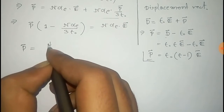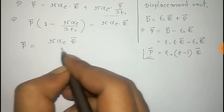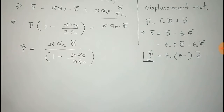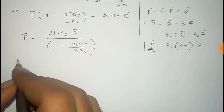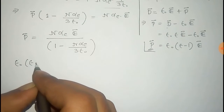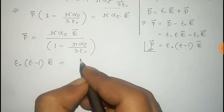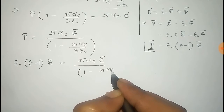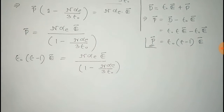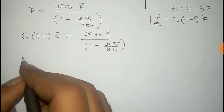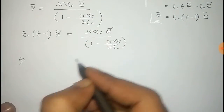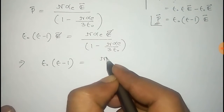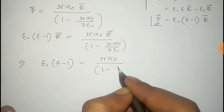We find P from the earlier relation: P equals n·α·E divided by (1 minus n·α divided by 3·ε₀). Substituting this value of P into ε₀·(ε − 1)·E equals n·α·E divided by (1 minus n·α divided by 3·ε₀), the E cancels on both sides, leaving ε₀·(ε − 1) equals n·α divided by (1 minus n·α divided by 3·ε₀). This is equation number one.